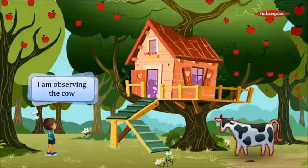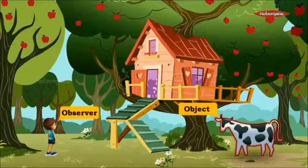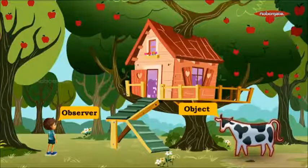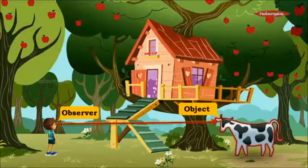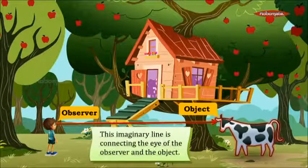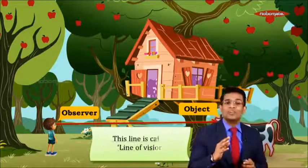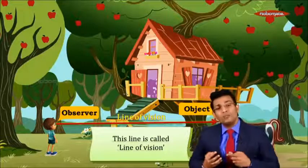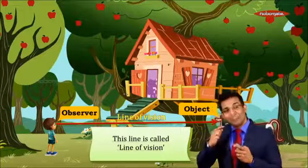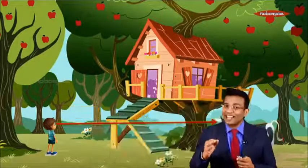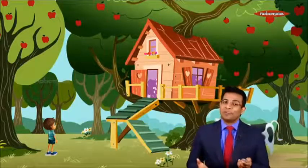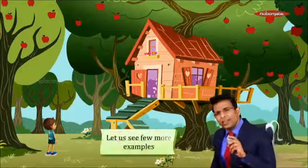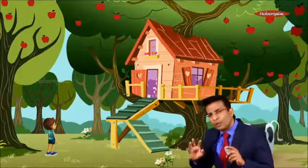Raj is observing a cow. In this situation, Raj becomes the observer and the cow becomes the object. When the observer watches the object, there is an imaginary straight line passing through his eye to the object. This line is called the line of vision — the straight line connecting the eye of the observer to the object.